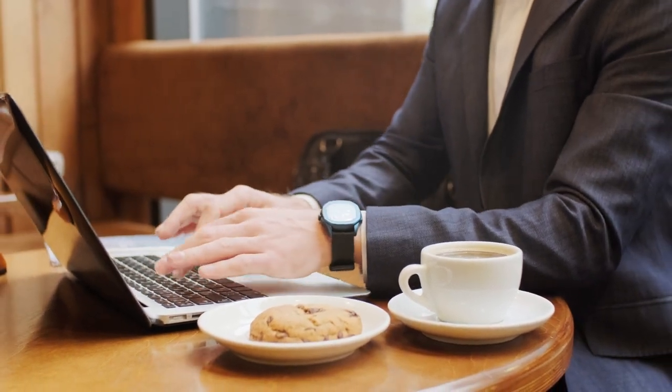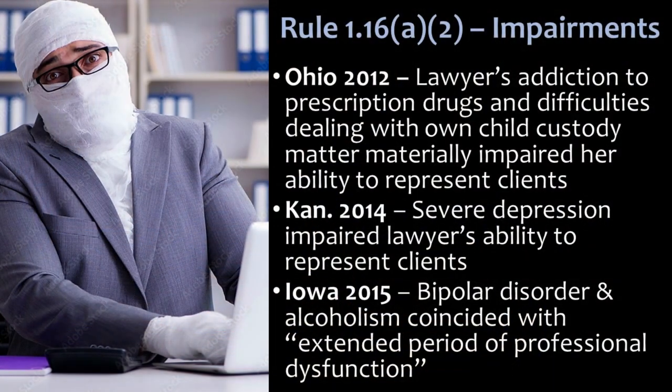Let's look at some examples of lawyers disciplined under this provision. In Ohio in 2012, a lawyer's addiction to prescription drugs and difficulties dealing with her own child custody matter materially impaired her ability to represent clients. In Kansas in 2014, a lawyer suffered from severe depression that impaired the lawyer's ability to represent clients. In Iowa in 2015, a lawyer had bipolar disorder and alcoholism which coincided, in the words of the court, to produce an extended period of professional dysfunction.